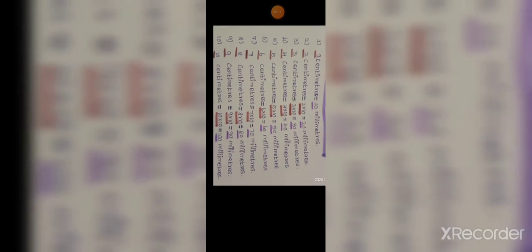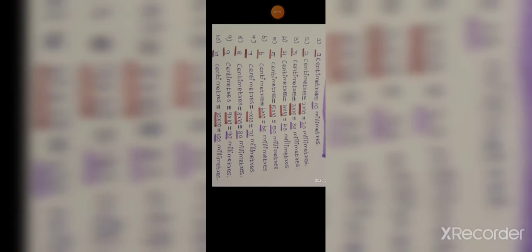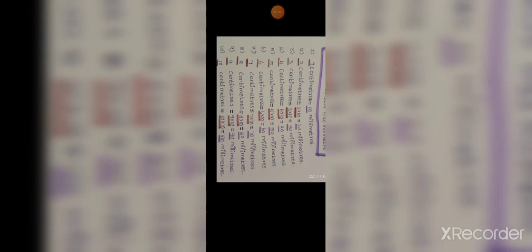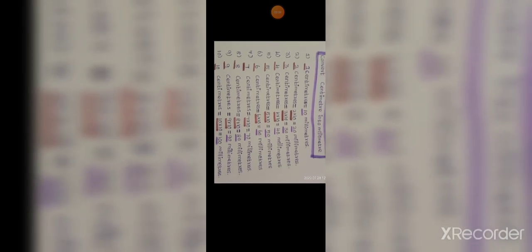Nine centimeters equal to nine into ten — nine tens are ninety — 90 millimeters. Last one: ten centimeters equal to ten into ten — ten tens are one hundred — 100 millimeters.